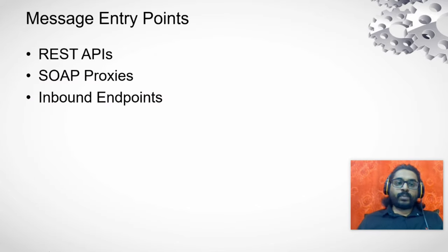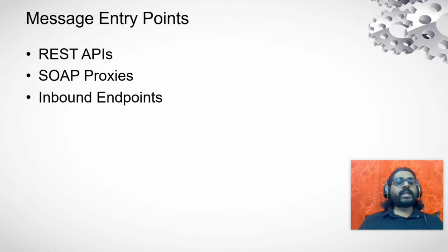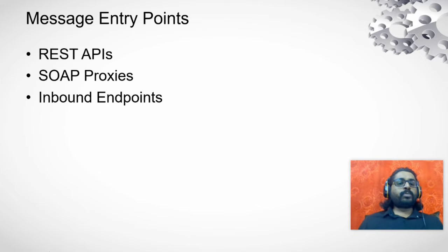The different messaging endpoints of ESB: first is REST API, which is a REST-based API that can have multiple resources. You can map multiple URI paths, have query parameters, path parameters, and request payload. Then you have proxies, which are SOAP-based web services. If you have a WSDL or XSD schema, you can build your SOAP proxy.